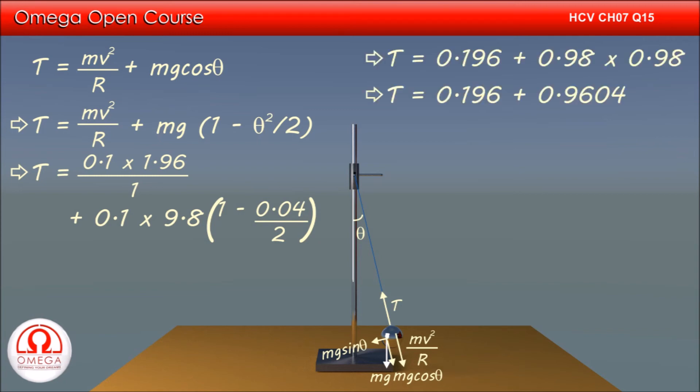Simplifying, we get T is equal to 1.1564 N, which when rounded to two places after decimal becomes 1.16 N. This is our answer.